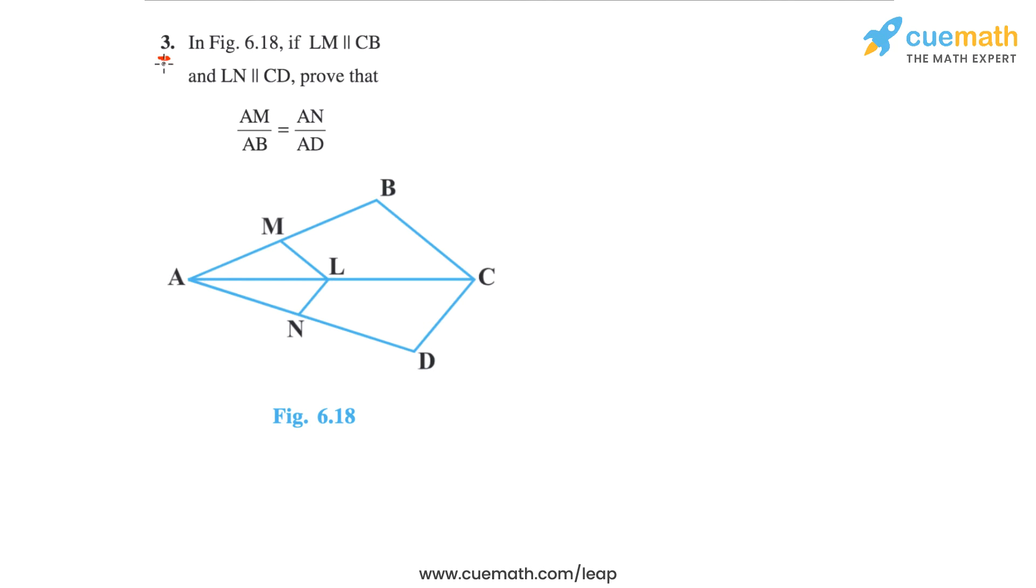In question 3, the problem statement says, in figure 6.18, this figure given here, if LM is parallel to CB, LM is parallel to CB, and LN is parallel to CD, so LN is parallel to CD.